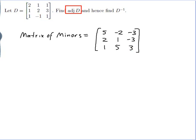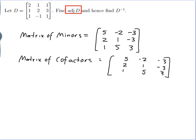The next step is to find the matrix of cofactors. It is a 3x3 matrix as well, and I get it from the matrix of minors. What I do to the matrix of minors is add extra plus or minus signs — the same plus or minus signs used to calculate the determinant. I begin in the top left with a plus, and every time I move one entry I change signs: plus, minus, plus, minus, plus, minus, plus, minus, plus.